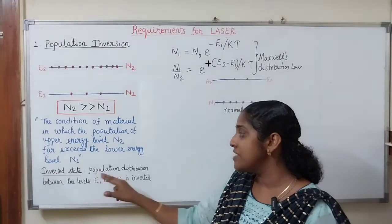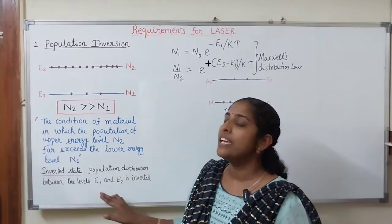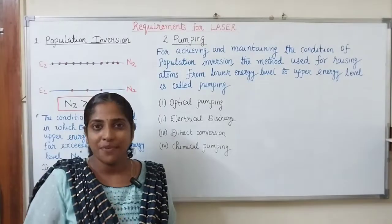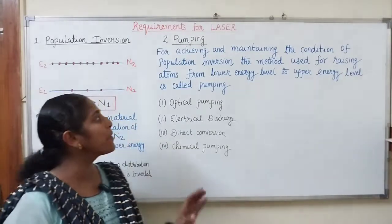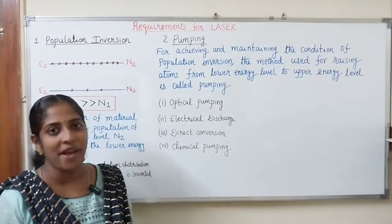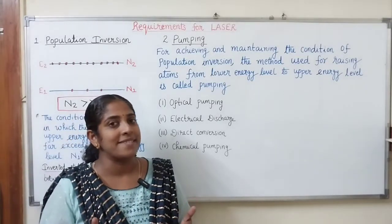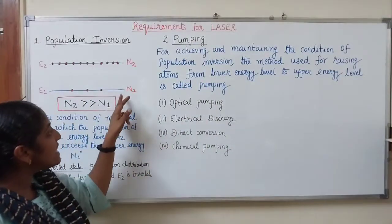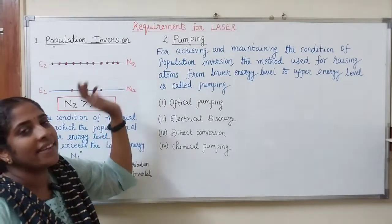So, for the laser action to take place, we require population inversion — the number of atoms in the higher energy level must be much greater than the number of atoms in the lower energy level. This can be achieved by a process known as pumping, where we are raising the atoms from the lower energy level to the higher energy level.